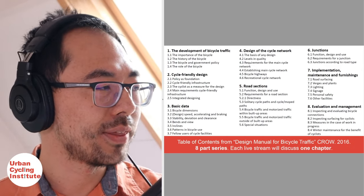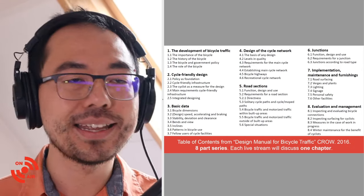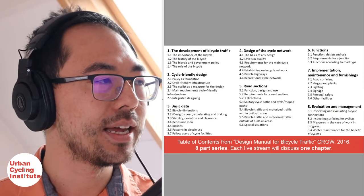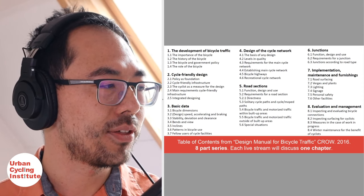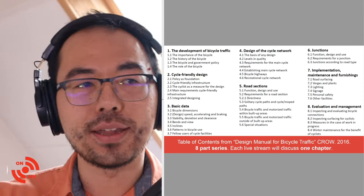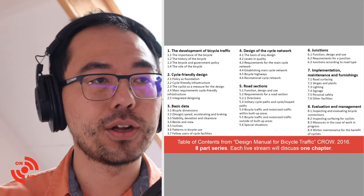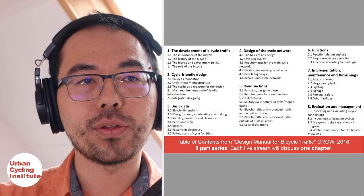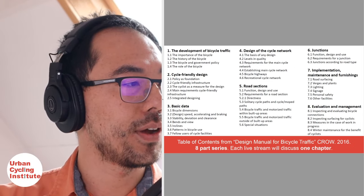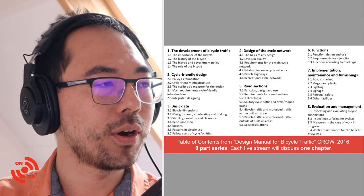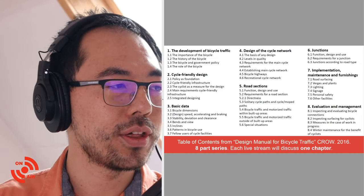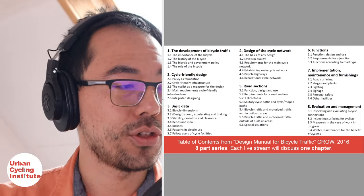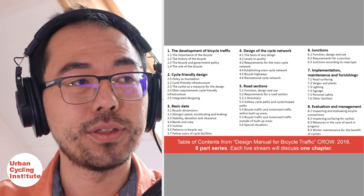Chapter two: bicycle-friendly design. Three: the basic data — that's the data on human dimensions, the speed of cycling, and the basic physical elements. Four: the design of the cycle network, which goes more into the macro level. Five: the road section — how the various micro street design works. Number six: the junctions. Seven: implementation. Eight: evaluation management. And then finally there's actually a chapter nine, which has all the design sheets.